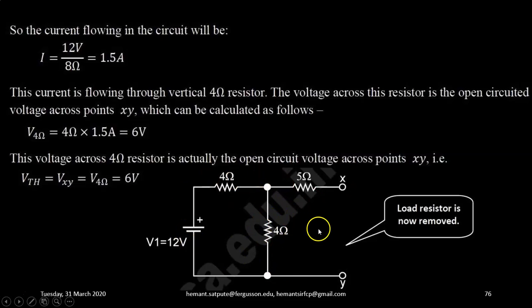So this voltage across 4 ohm resistor is actually the open circuit voltage across points X and Y that is Vth is equal to Vxy is equal to voltage across 4 ohm resistor that is equal to 6 volt. I hope the procedure is clear to find Vth.